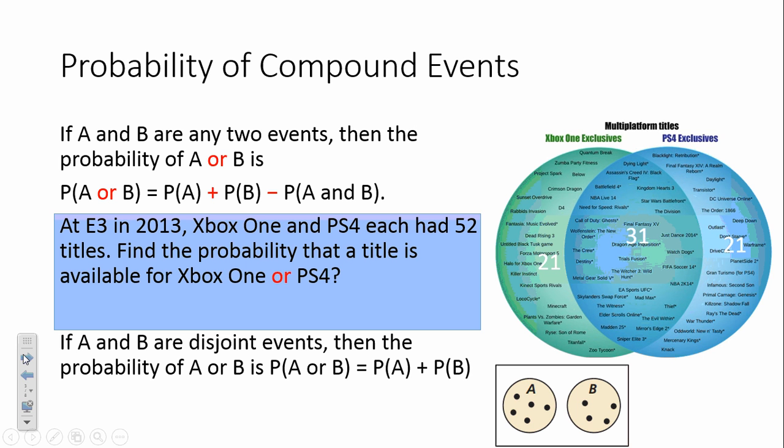So, to put some of this into your notes, the probability of compound events. Probability of compound events says that if A and B are two different events, then the probability of A or B is going to be P of A or B. And, we add up the probability of A, to the probability of B, and we take away their overlap.